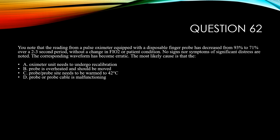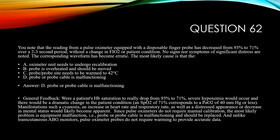The answer is D, the probe or probe cable is malfunctioning. It's virtually impossible for a patient's sat to go from 93 to 71 in a couple of seconds with a clinically stable patient — you should be thinking there's an equipment issue. Manifestations such as cyanosis, increased heart and respiratory rate, and distressed appearance or decreased mental status would likely become apparent if the saturation was truly 71. Since pulse oximeters do not require manual calibration — that's a distractor — the most likely problem is an equipment malfunction, specifically the probe or probe cable.